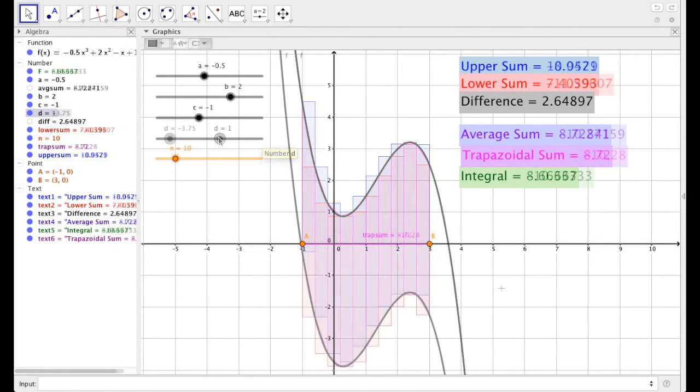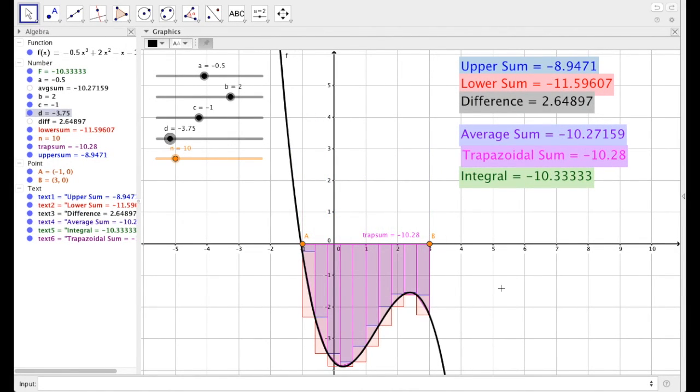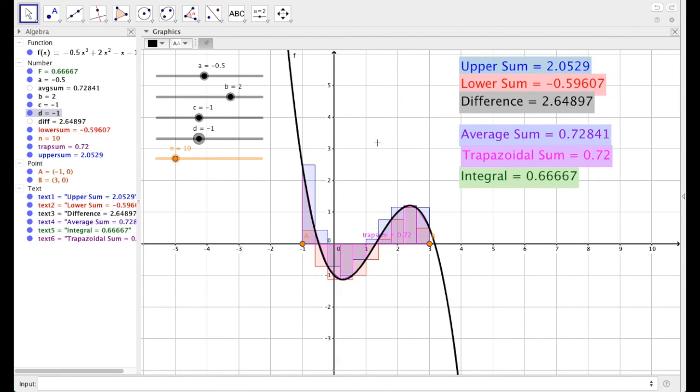One last discussion, and that's with d. When d is negative 3.75, all the rectangles and trapezoids are below the x-axis. Now area in geometry purposes can't be negative. But here, we are calculating negative areas, because it's the area below the x-axis. So here, the actual integral is negative 10.33 repeating. If d was negative 1, notice the actual integral is 0.66. Notice the actual integral is 2 thirds. This integral has some positive parts, some negative parts, and some positive parts again. Notice the parts below the x-axis are subtracted from the parts above the x-axis.